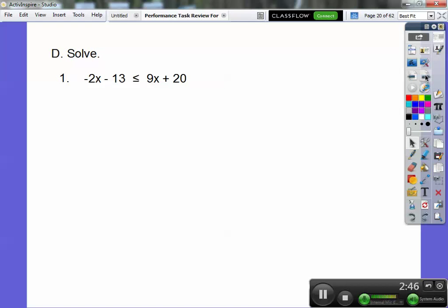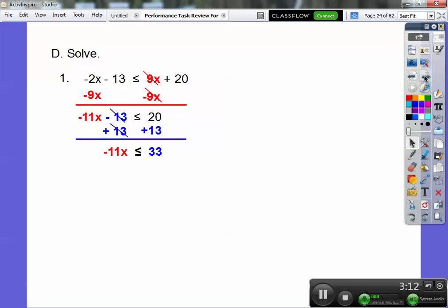On this inequality, you treat this just like an equation. I'm going to get rid of this 9x by subtracting 9x from both sides. A common error is thinking this is 7x or negative 7x. It's negative 11x because you add these two together. Then add 13 to both sides. Now divide by negative 11, which flips the inequality.